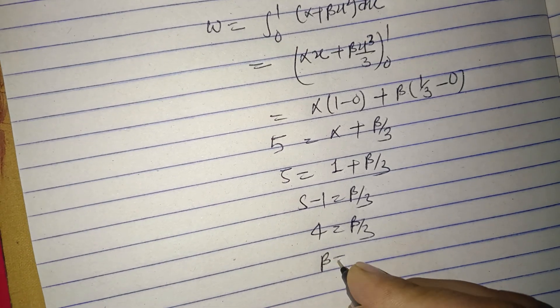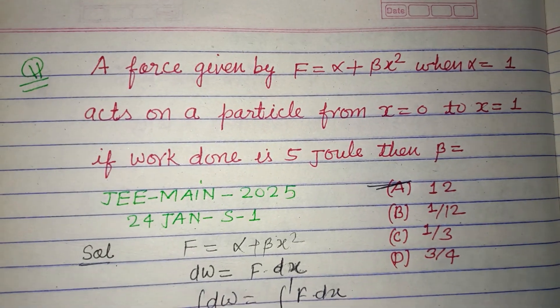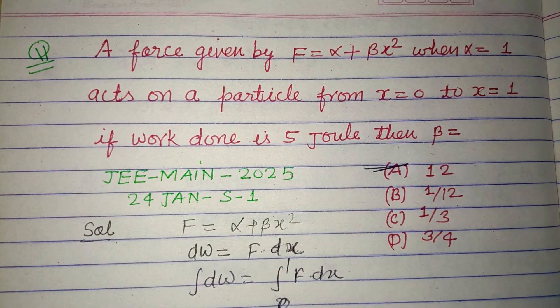Therefore β = 12. So the value of beta is 12, which is found in option A. So option A is correct. I hope you got it, please like the video, subscribe the channel, thanks for watching.